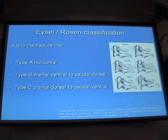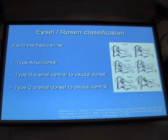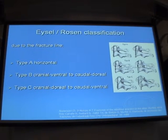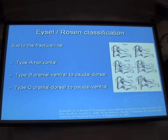The modification of this classification is type 2 Anderson-D'Alonzo. It depends on the fracture line. If you have a horizontal fracture line, you can treat this fracture from ventral with one or two screws. If you have type B, the fracture line runs from cranial-ventral to caudal-dorsal, so you can treat this through the ventral approach. Type C has a cranial-dorsal to caudal-ventral fracture line. It's not usual to treat this fracture ventrally, so you use the dorsal approach.